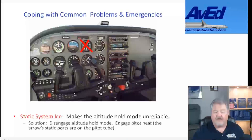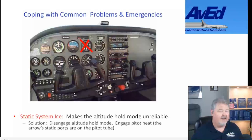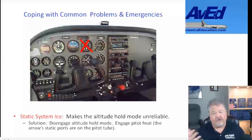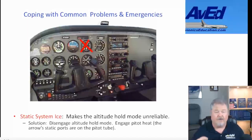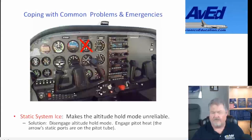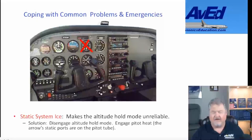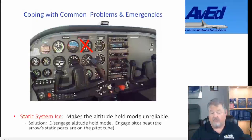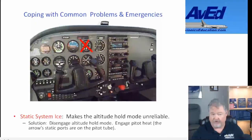So if you know you have fuselage ice and you're blocked over — meaning you're descending when you shouldn't be, and some of your other instruments are telling you you're descending — shut off your altitude hold and concentrate on your altimeter.